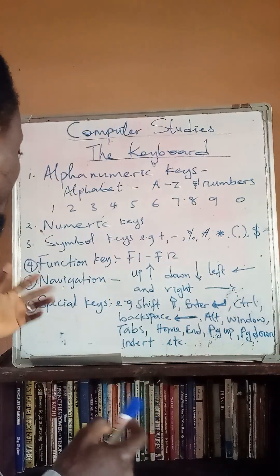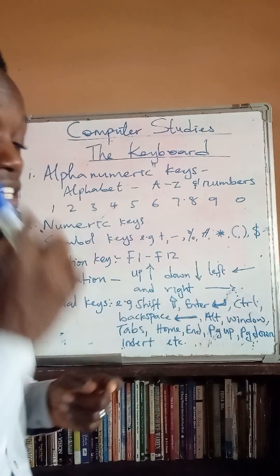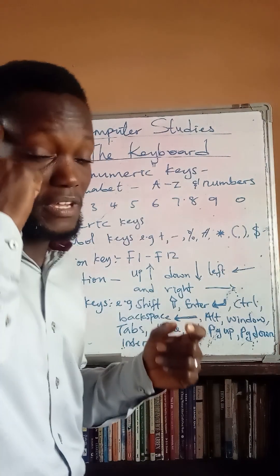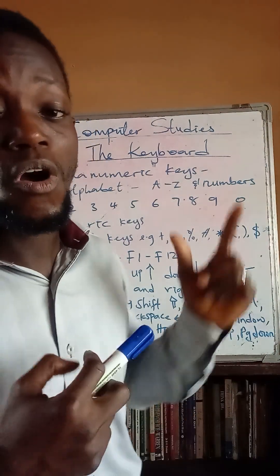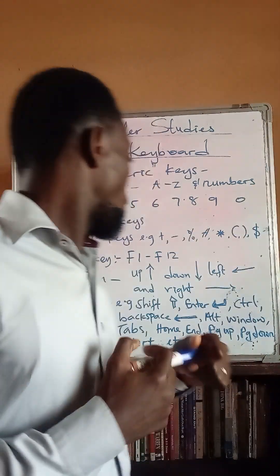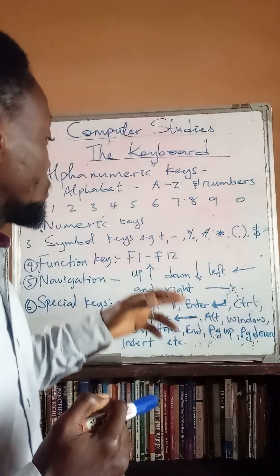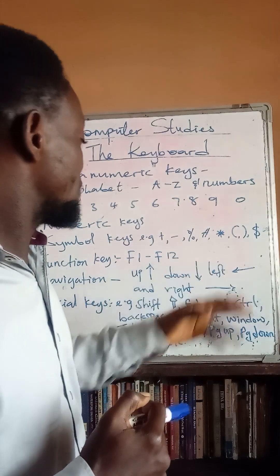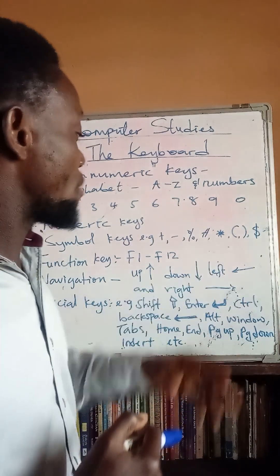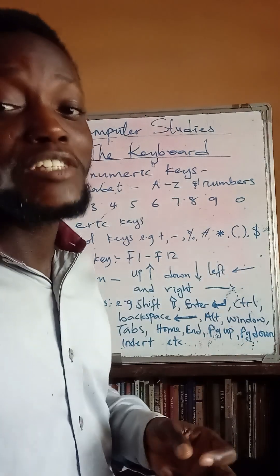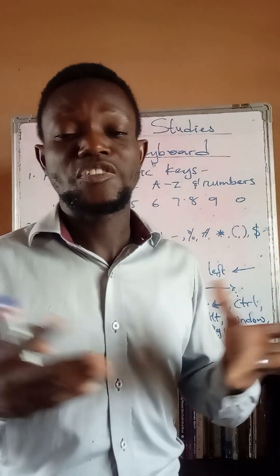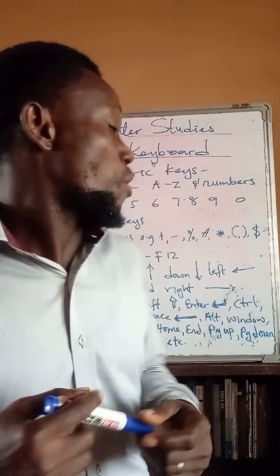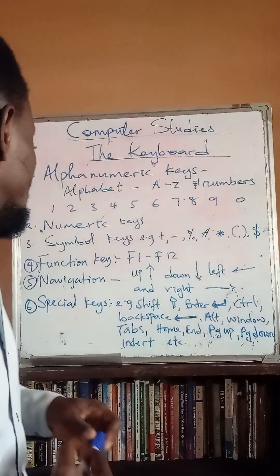Then we have the navigation keys. The navigation keys include the arrow up, arrow down, arrow left, and arrow right. They are used to move around on the screen of your computer.